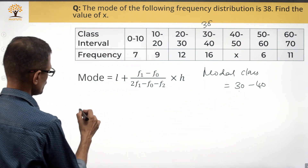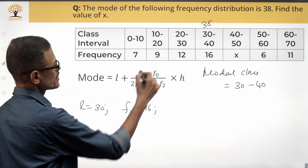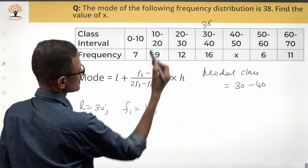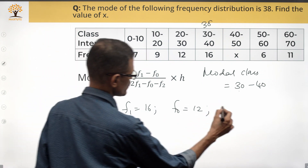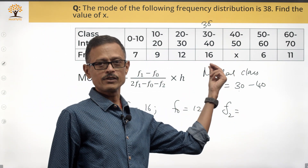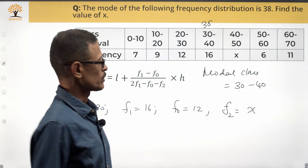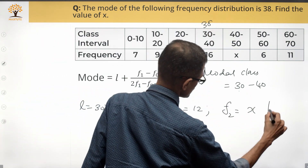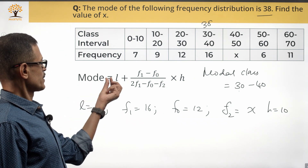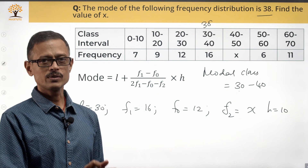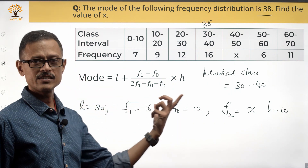The mode formula is: Mode = L + [(F1 − F0) / (2F1 − F0 − F2)] × H. L is the lower limit of the modal class = 30. F1 is the frequency of the modal class = 16. F0 is the frequency of the class preceding the modal class (20–30) = 12. F2 is the frequency of the class after the modal class (40–50) = X, which is what we're finding. H is the interval size = 10. We know mode = 38, so we plug in 38 and solve for X.